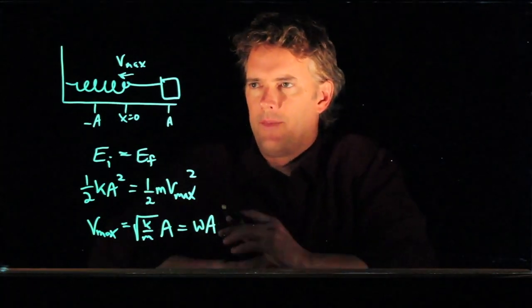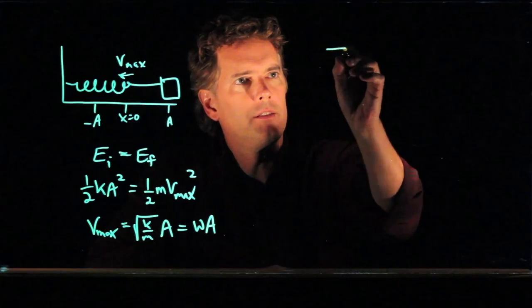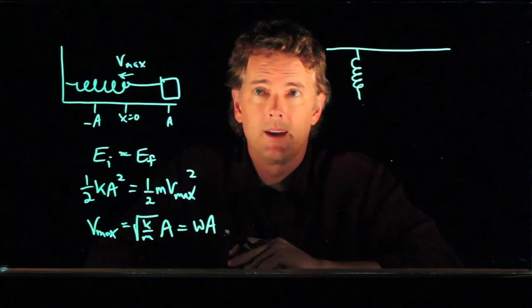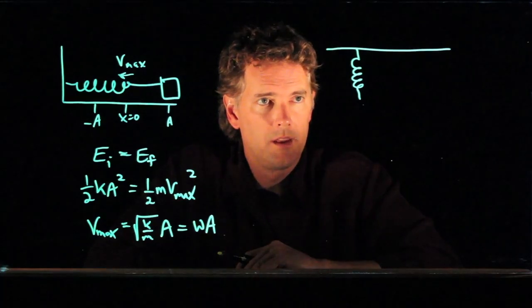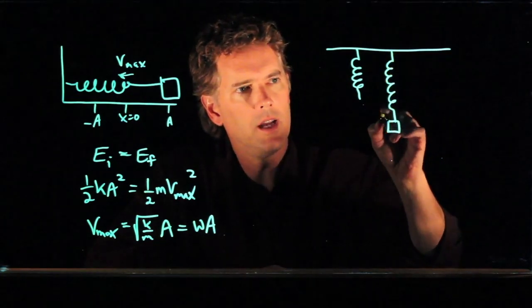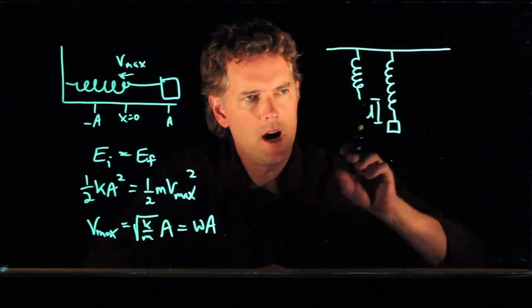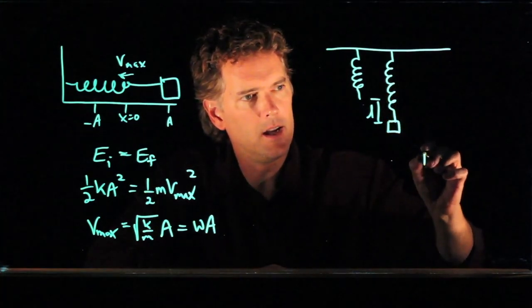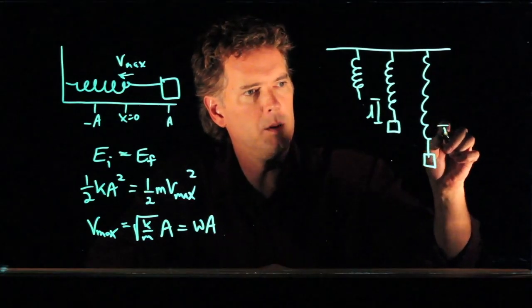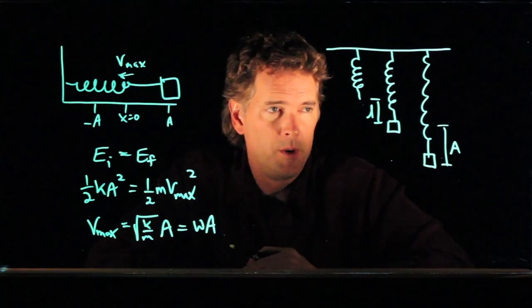Now how does that differ if we take that system and instead we hang it from the roof? So let's draw the system hanging from the roof. First off, let's just hang the spring. It's hanging at its equilibrium length. And now let's attach the box. When we attach the box, it stretches a little bit. It stretches a distance L. And now let's stretch it by hand a distance A from the equilibrium spot down to there. We'll let it go. What's it going to do? Well, we know it's going to oscillate up and down.